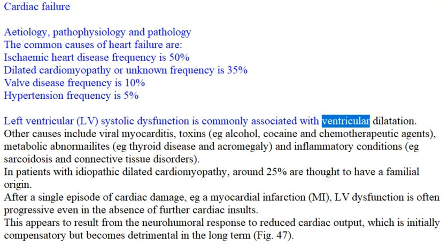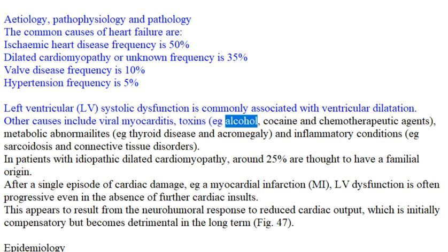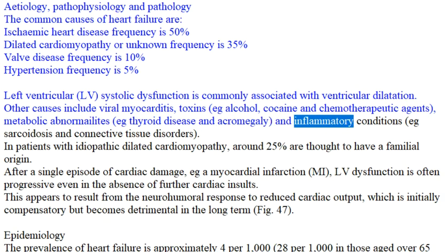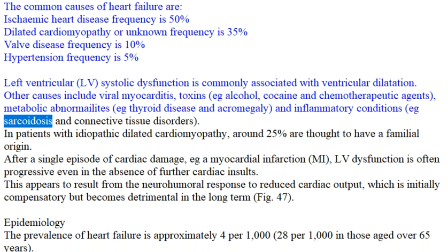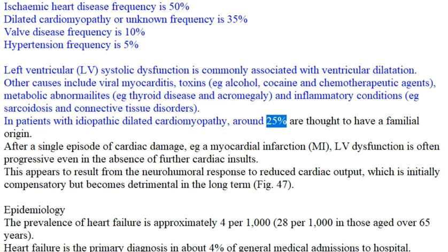Other causes include viral myocarditis; toxins such as alcohol, cocaine, and chemotherapeutic agents; metabolic abnormalities such as thyroid disease and acromegaly; and inflammatory conditions such as sarcoidosis and connective tissue disorders. In patients with idiopathic dilated cardiomyopathy, around 25% are thought to have a familial origin.